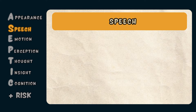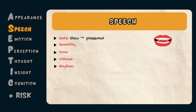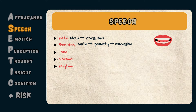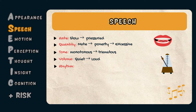Assessment of a patient's speech can be broken down into rate, quantity, tone, volume, and rhythm. Rate can range from slow to pressured speech, which is when they are speaking rapidly and are difficult to interrupt. Quantity can range from mute to poverty of speech all the way to excessive speech. Tone refers to intonation or variability in speech, such as monotonous or tremulous speech, which can be seen in anxiety disorders. Volume can range from quiet to loud, and rhythm can include characteristics such as stammering, stuttering, slurring, or stilted speech.